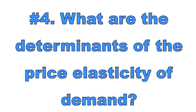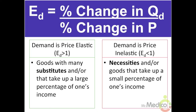Number four: what are the determinants of the price elasticity of demand? In economics, elasticity translates to responsiveness. The price elasticity of demand measures how responsive consumers are to changes in the price of a good. The formula is percent change in quantity demanded divided by percent change in price. When elasticity is greater than one, goods with many substitutes and/or goods that take up a large percentage of one's income tend to be price elastic — consumers are sensitive to price changes. Demand is price inelastic when elasticity is less than one; inelastic goods are necessities and/or goods that take up a small percentage of one's income, meaning consumers are not sensitive to price changes.